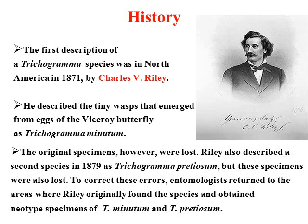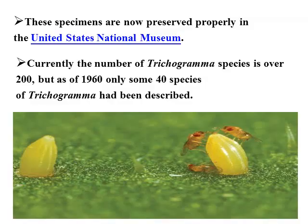This is the scientist Charles Riley, the founder who worked on the first description of the Trichogramma species in the world in 1871. He described the tiny species Trichogramma minutum, and after that he also described Trichogramma pretiosum. After that, various species were also identified by scientists.